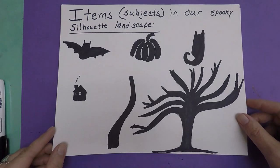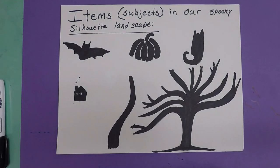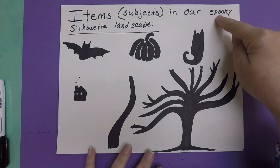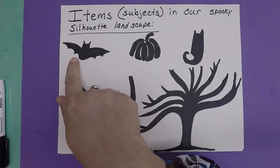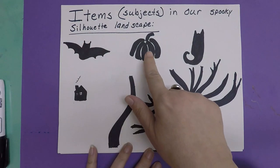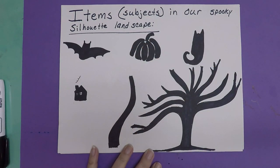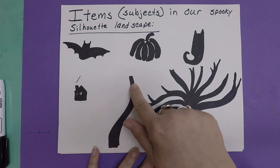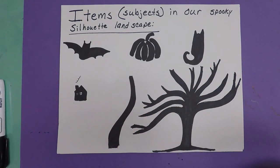Hi! Today we are going to draw a picture with silhouettes. A silhouette is something that shows the outline of an item or a thing. In the picture we're going to draw today, the silhouettes are going to give us a spooky feeling. It's a landscape. We're going to have the silhouette of a bat, a pumpkin, a cat, maybe a house, a path or sidewalk, and a tree. These are the subjects of our painting or drawing.